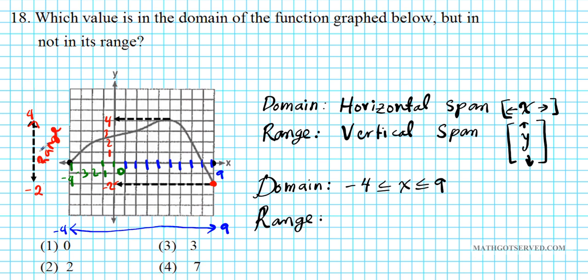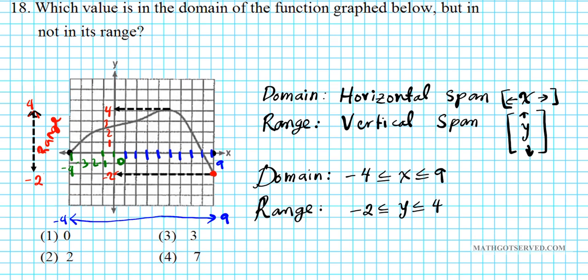Okay? So this is your range right here. Alright? The vertical span of your graph. So if my graph goes from negative two, less than or equal to y, less than or equal to four. Alright? Now that we know our domain and range, let's go ahead and answer this question.